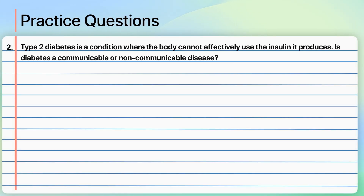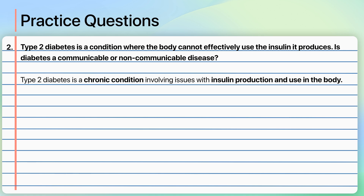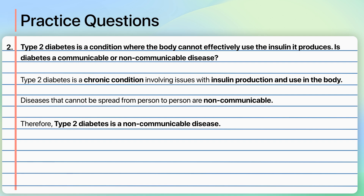Let's look at another question. Type 2 diabetes is a condition where the body cannot effectively use the insulin it produces. Is diabetes a communicable or non-communicable disease? Type 2 diabetes is a chronic condition involving issues with insulin production and use in the body. Diseases that cannot be spread from person to person are non-communicable. Therefore, type 2 diabetes is a non-communicable disease.